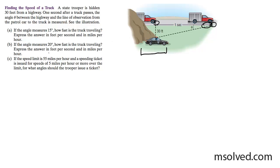So solving for A, if the angle measure is 15 degrees, how fast is the truck traveling presently? So what we're going to do here is I'm going to rewrite this here as this angle here. So this is 15 degrees. This is 30 feet, it's always 30 feet, and after one second it's going 15.